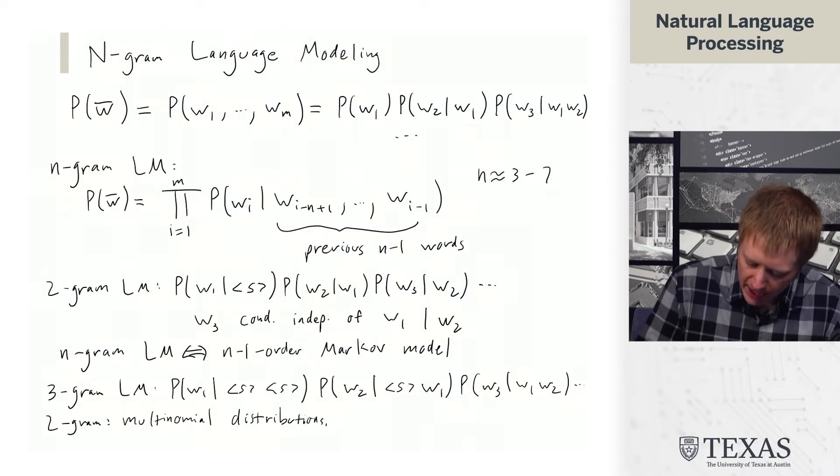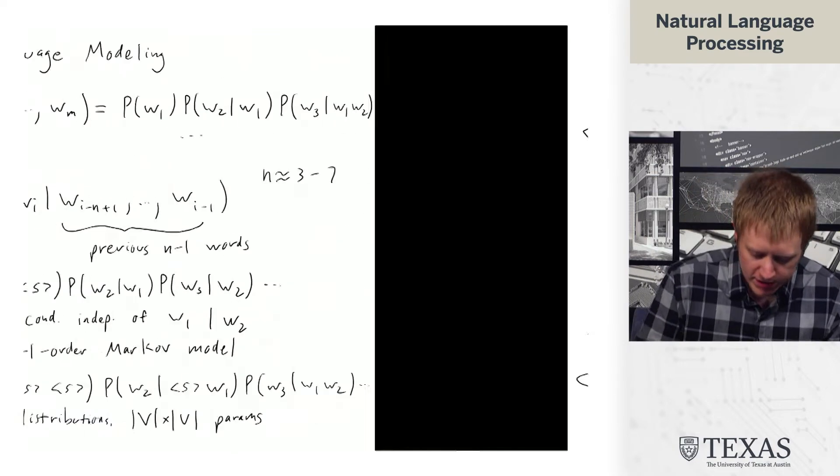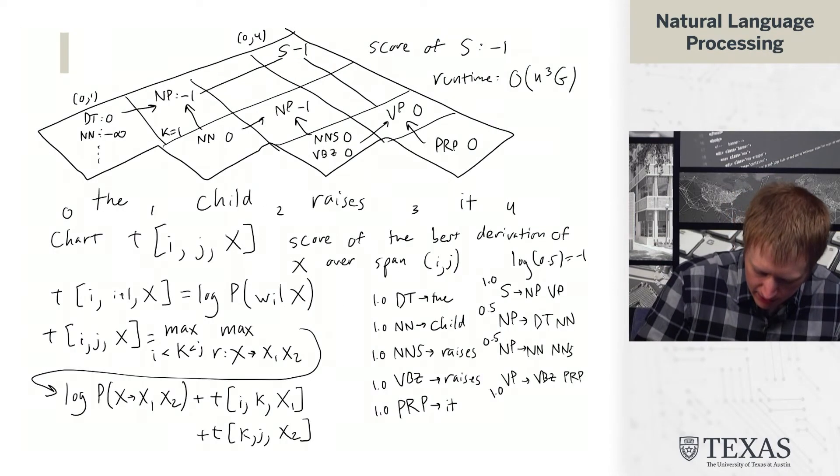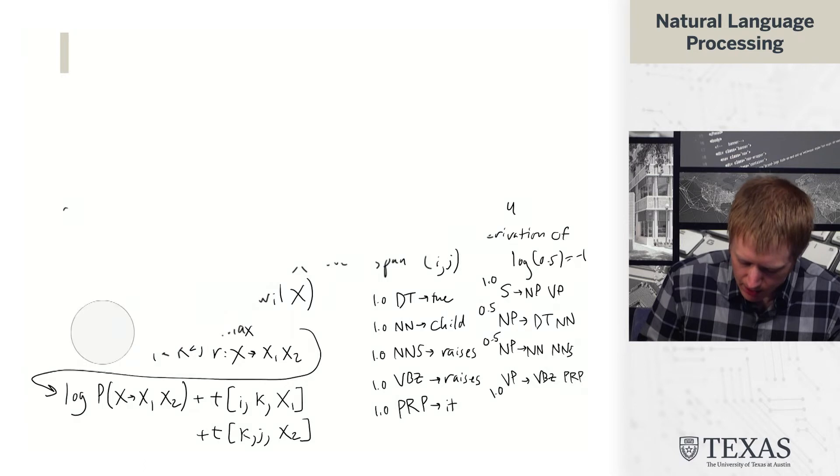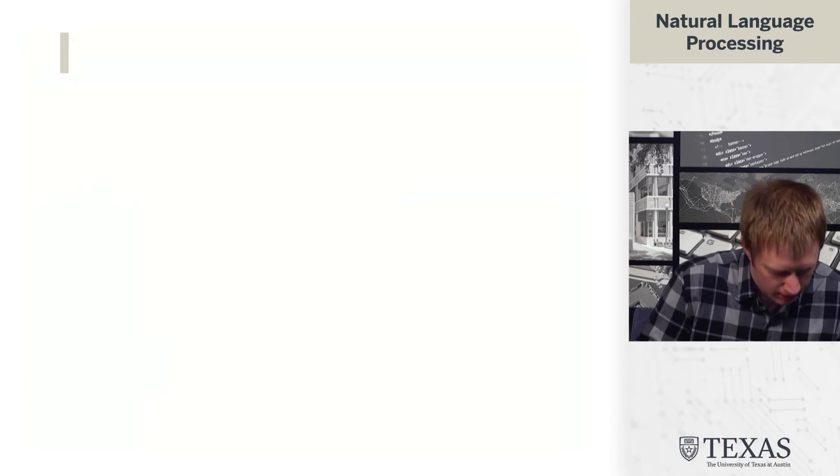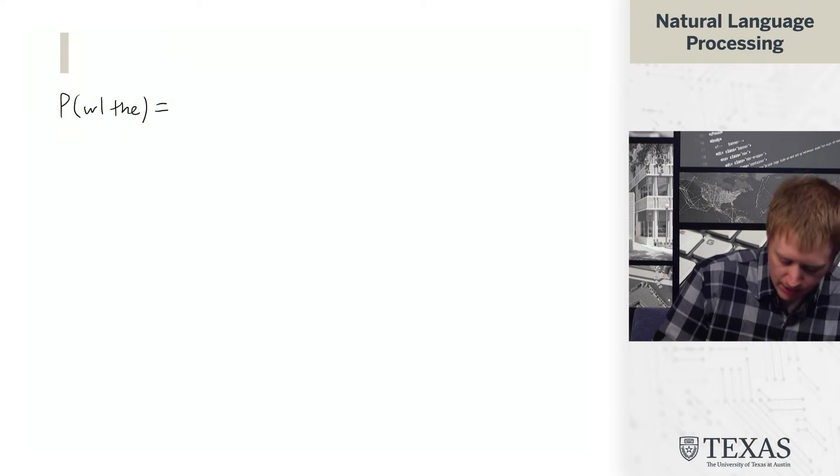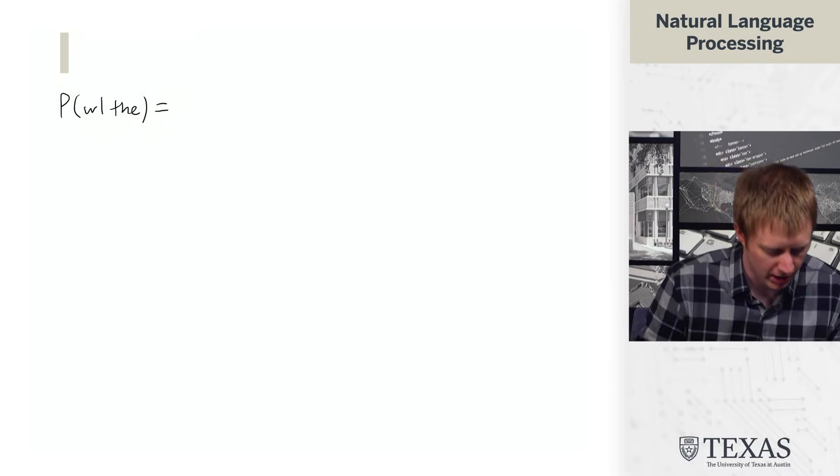So what we have is, we're going to let v denote the size of the vocabulary. We have v by v parameters. And what do these parameters look like?